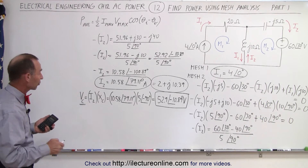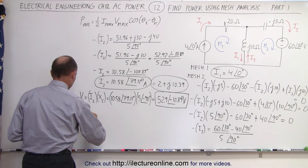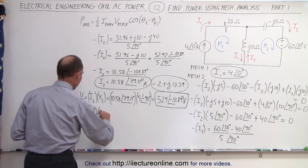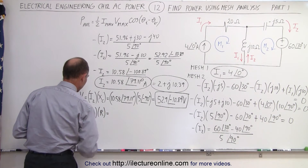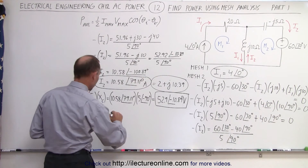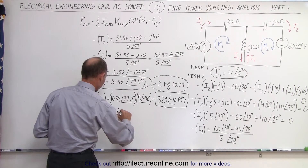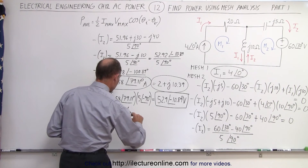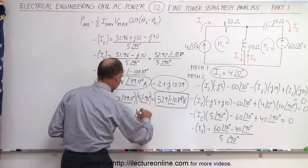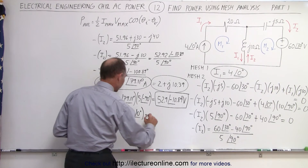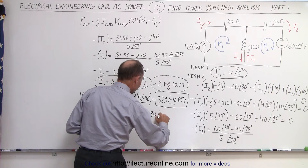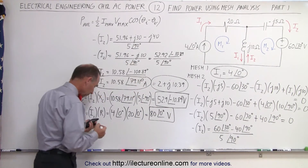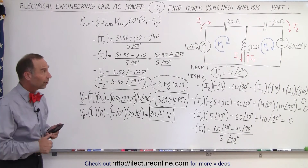Now we want the voltage across the resistor. V_R equals I1 times R. I1 is 4 at 0 degrees, and the resistance is 20 at 0 degrees. So V_R equals 80 at a phase angle of 0 degrees, in volts.